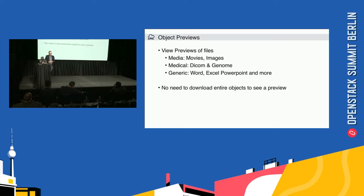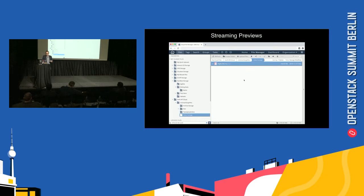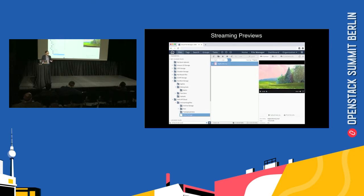Object previews are also pretty important for customers dealing with large files — they don't want to have to download the whole object just to see whether it's the one they're looking for. The File Fabric provides previews for lots of different file types. Media files can be very large — terabytes in size — so users can simply initiate previews and stream those files without needing to download a one-terabyte file to see what's in it. This is also applicable to other use cases like DICOMs and genome files, and there are generic viewers for Word, Excel, PowerPoint, and other common tools. Here with a 150 megabyte MP4, you can click the preview, with no need to download the full file — it streams straight from the object storage and you can scrub through the video to find the right moment.